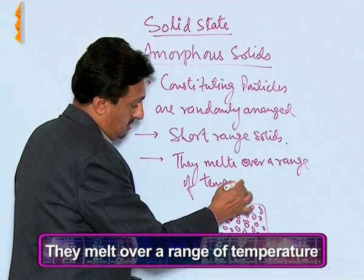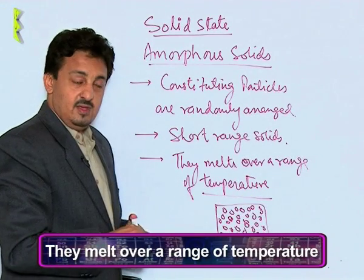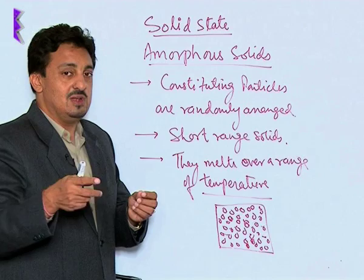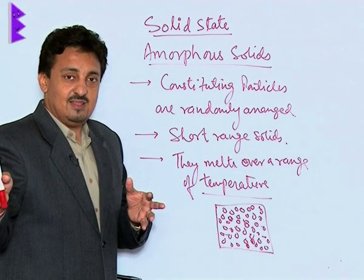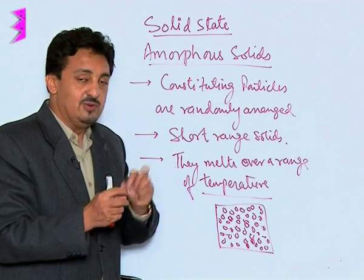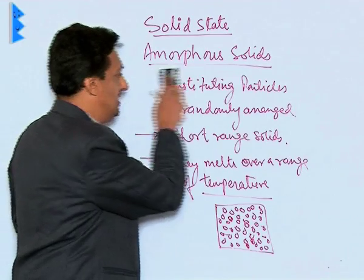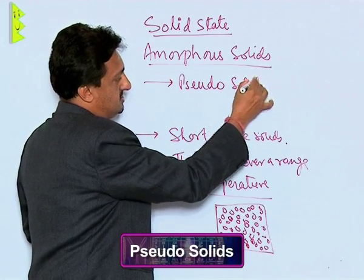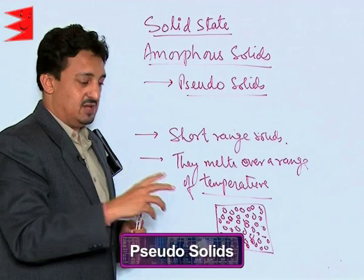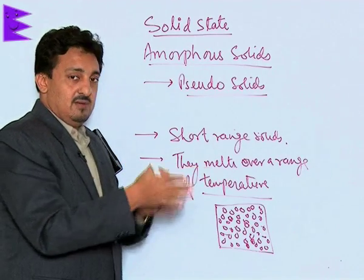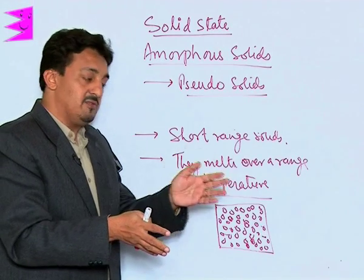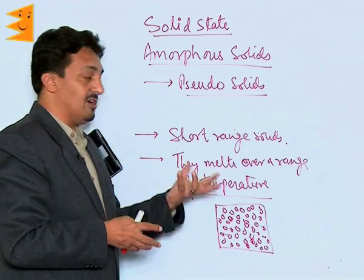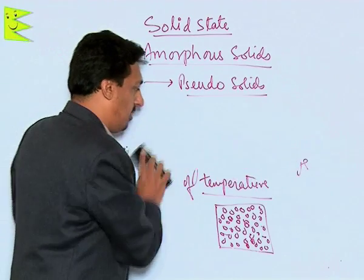Amorphous solids do not have a sharp melting point; they melt over a range of temperature. For example, they might start melting from 60°C and continue to do so till 90 or 95°C, after which they are completely in the liquid state. From 60 to 95 they are in a semi-fluid state. That is why we call these solids pseudo solids or false solids — because at room temperature some of their interparticle forces are already broken and some are still intact, placing them in a pseudo-solid state.